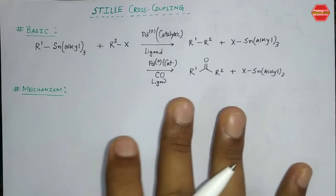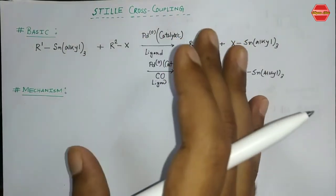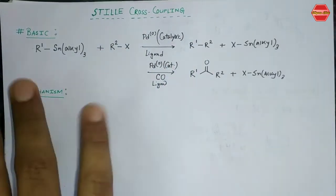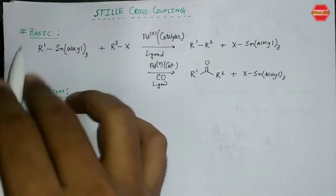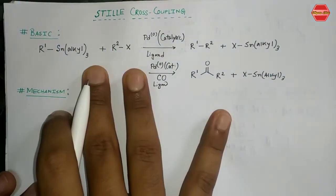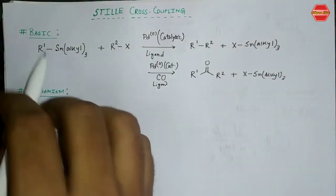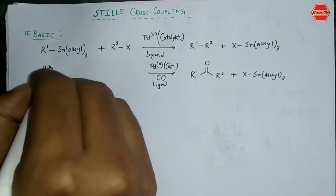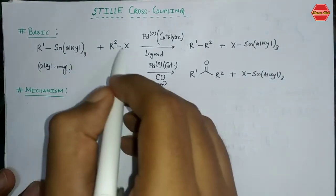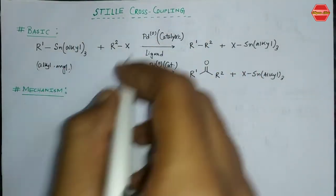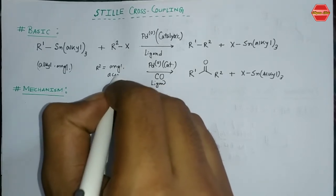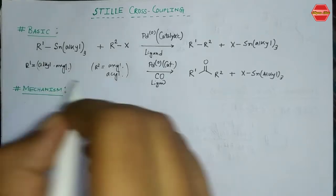This is also a similar kind of carbon-carbon sigma bond formation reaction. In the case of the Stille cross-coupling reaction, the substrate is quite specific. We are taking R1 connected to tin — this is the organotin or organostannane — and R1 can be hydro, alkyl, or aryl groups. R2 is connected to a halide or leaving group X, so we are taking an organohalide. R2 can be aryl, acyl, or alkyl.